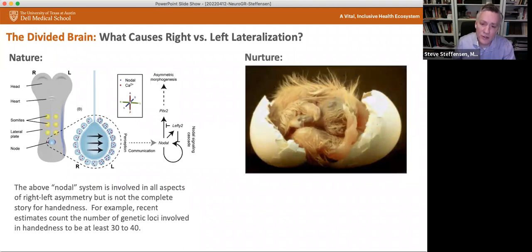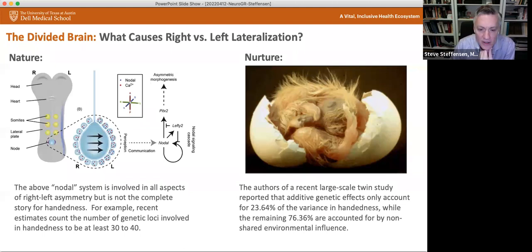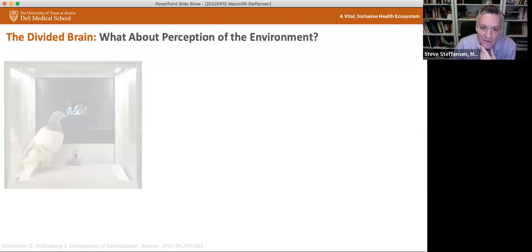So what causes the right versus left lateralization? The hunt for a particular gene looking for one gene that causes this lateralization of the brain has been elusive. In fact, there are many genes that have been identified, but there is a nature component to this, a genetic component to this. There's this structure called the node in the developing embryo that has the cilia that beats in a particular direction, aligning genetic information on one side on the left side in particular, creating a left-right symmetry within the organism. And this does have an impact on handedness, but it's not the whole story of handedness. So recent estimates count the number of genetic loci involved in handedness to be at least 30 to 40 different loci. There's also a nurture component or the exposure to the environment component.